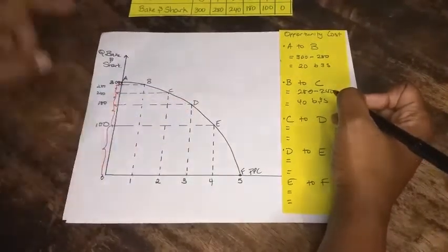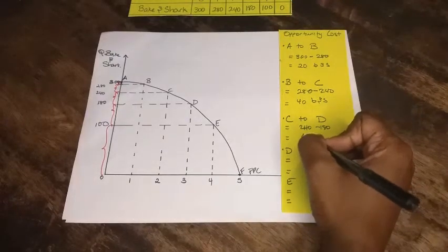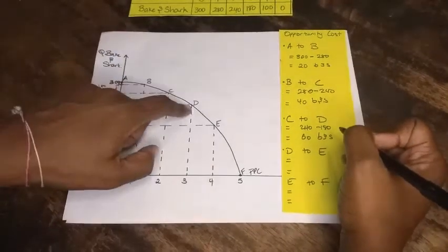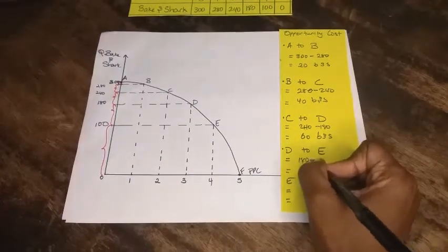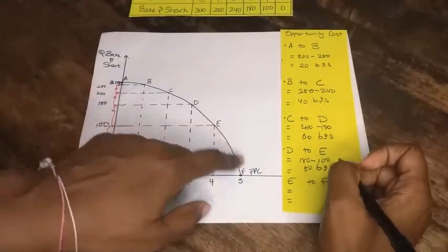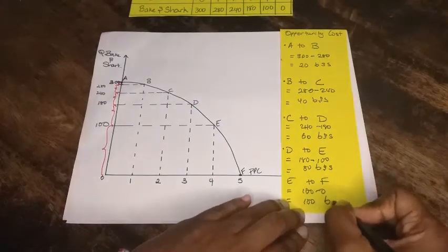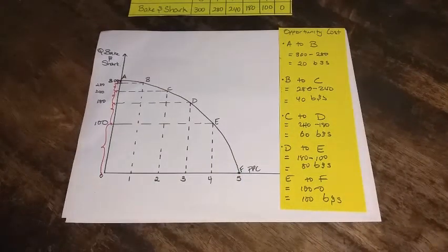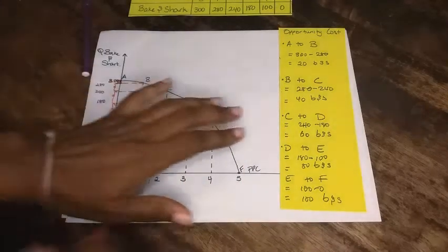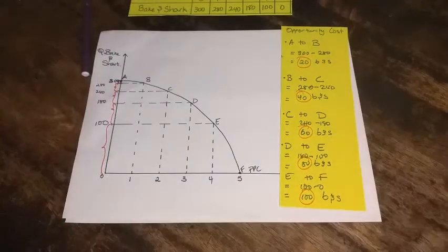As we move from point C to D, we give up 240 minus 180, which gives us 60 bacon shark. From D to E, we give up 180 take away 100, which gives us 80 bacon shark. From point E to F, we give up 100 take away zero, which gives us 100 bacon shark. So as we increase the production of t-shirts by one unit, the opportunity cost went from 20 to 40 to 60 to 80 to 100 — it is increasing, hence the increasing opportunity cost.